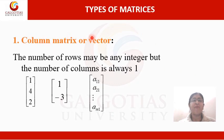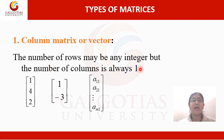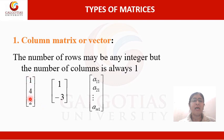Next is types of matrices. The first type is a column matrix or vector. The number of rows may be any integer but the number of columns is always 1. In a column matrix, the column count is always 1. For example, [1, 4, 2] or [1, -3] — number of rows are 1, 2, 3 but number of columns is 1.